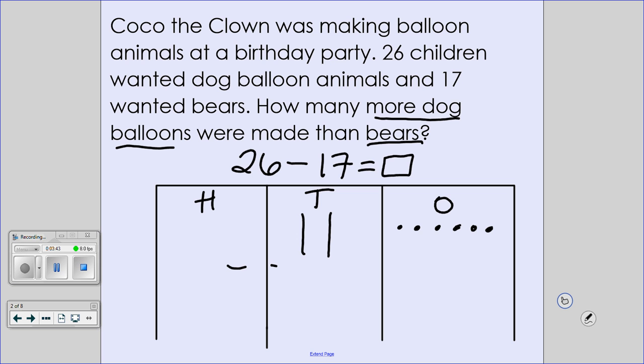Just like yesterday, if you want to put the little dash line to separate your numbers, you can. And let's go ahead and draw out our second number. Seventeen bear balloons. How many hundreds are in 17? None. How many tens are in 17? One. One ten. And how many ones are in 17? Seven.